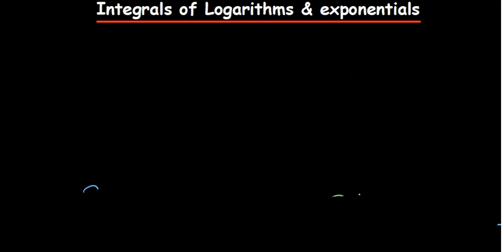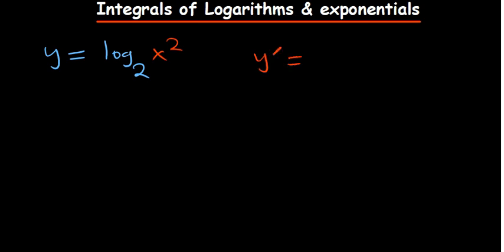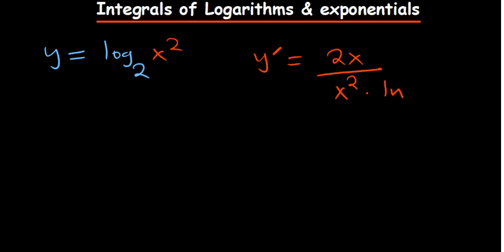Now one more example under logarithms: what about the case where we have log base 2 of x²? Here, y′ is the derivative of what is attached to the log — which is 2x — divided by the function x² itself, multiplied by the natural log of the base, which is natural log of 2.